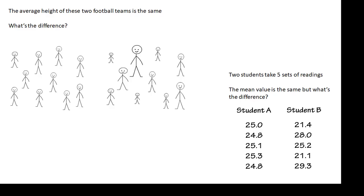Another one. Two students do an experiment and each of them takes five sets of readings. And again, the average value, the mean value for student A's results and student B's results is the same. If you work it out you'll see that it's the same. But what's the difference? Look at student A's results. Look at student B's results. What is the difference?